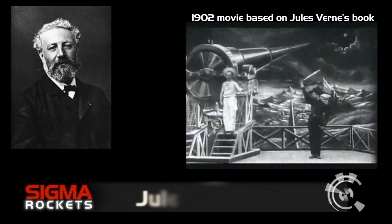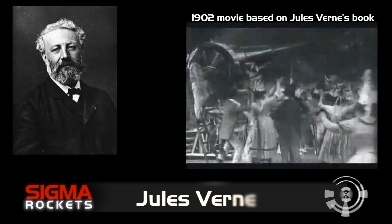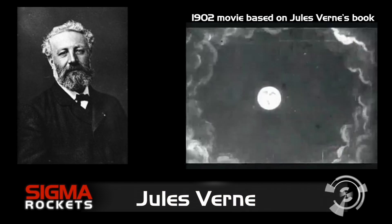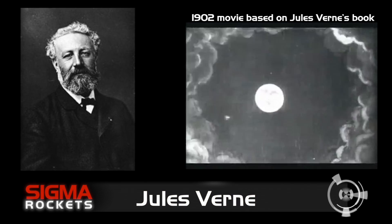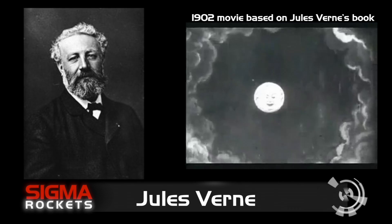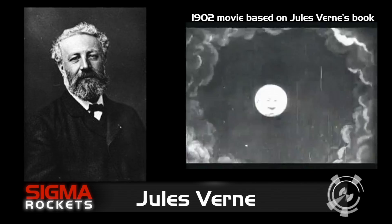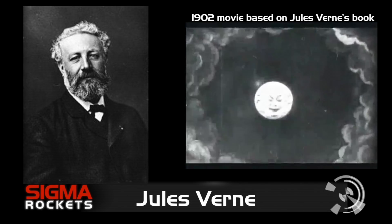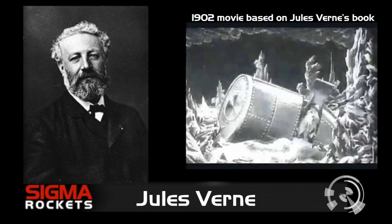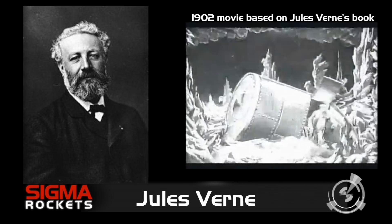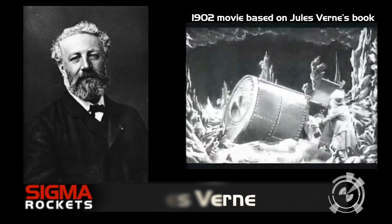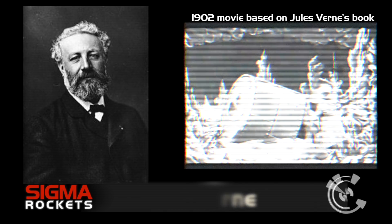Writer Jules Verne sparked the imagination of those dreaming of space travel. His book, From the Earth to the Moon and Round the Moon, describes a fictional shot to the moon by a crew of three from a cannon. Although it is not possible for such a means of transportation to the moon, he did describe the journey with prescient detail, such as picking Florida for the launch site.